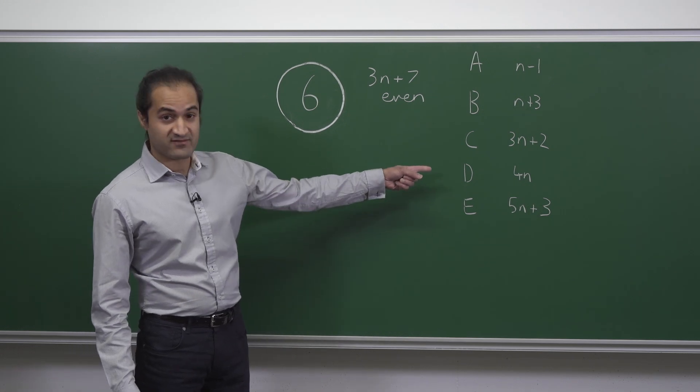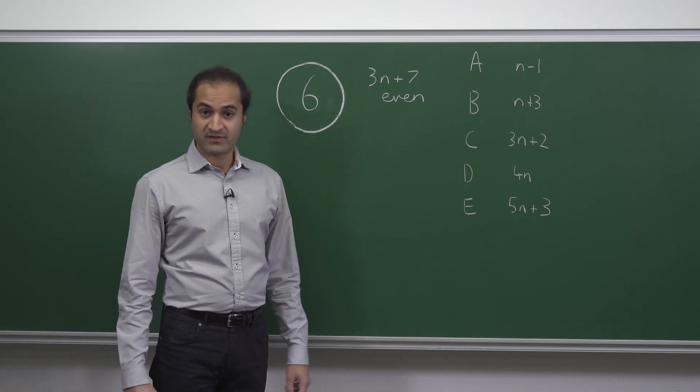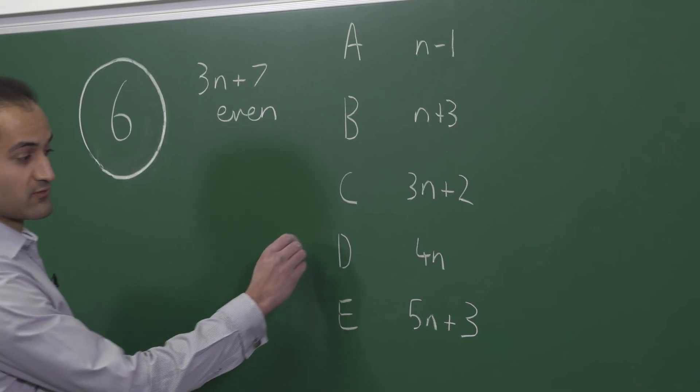So we can start by observing the expression for d, 4n, is always even. So we can rule out d.